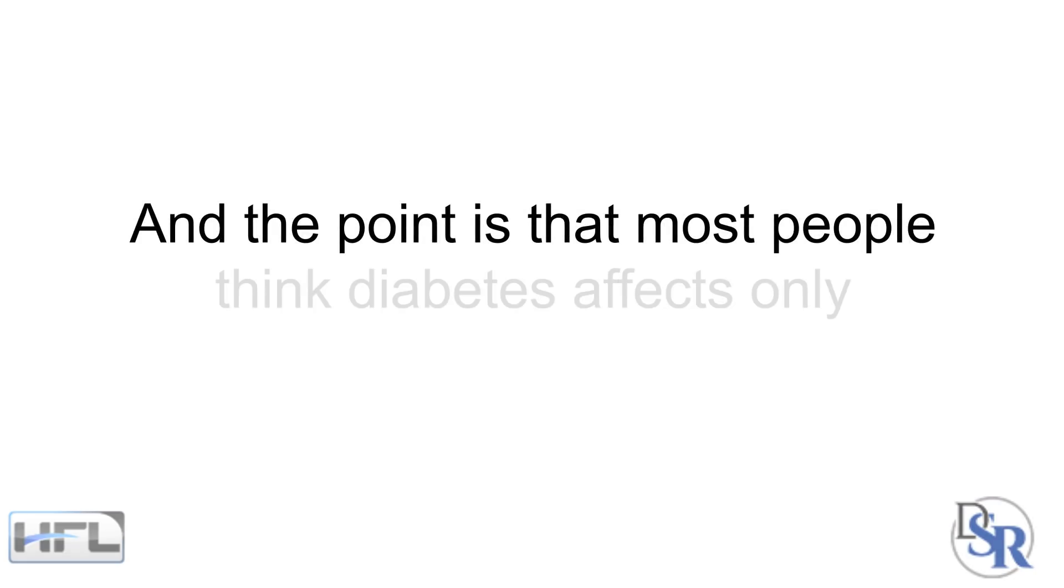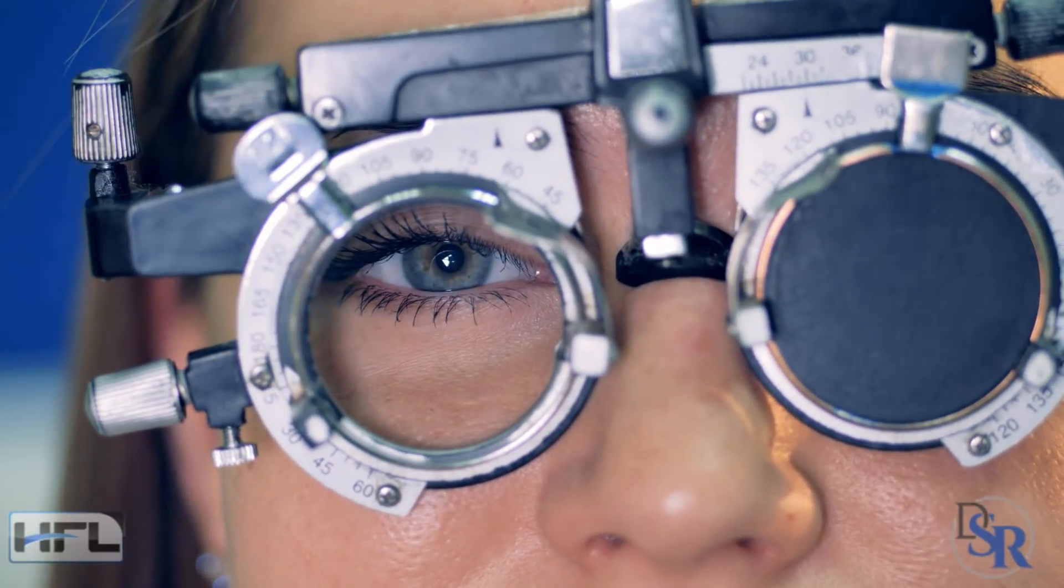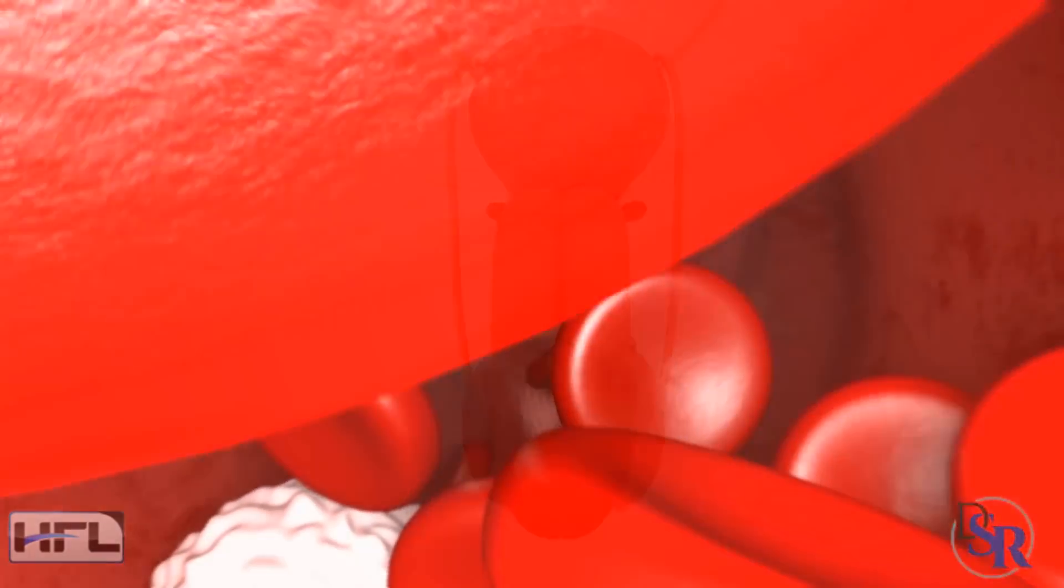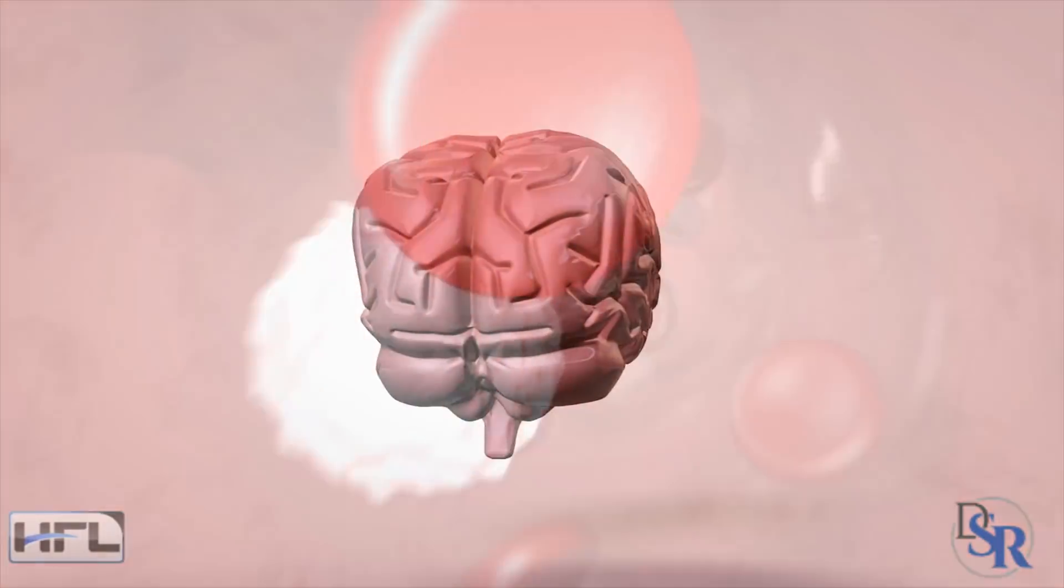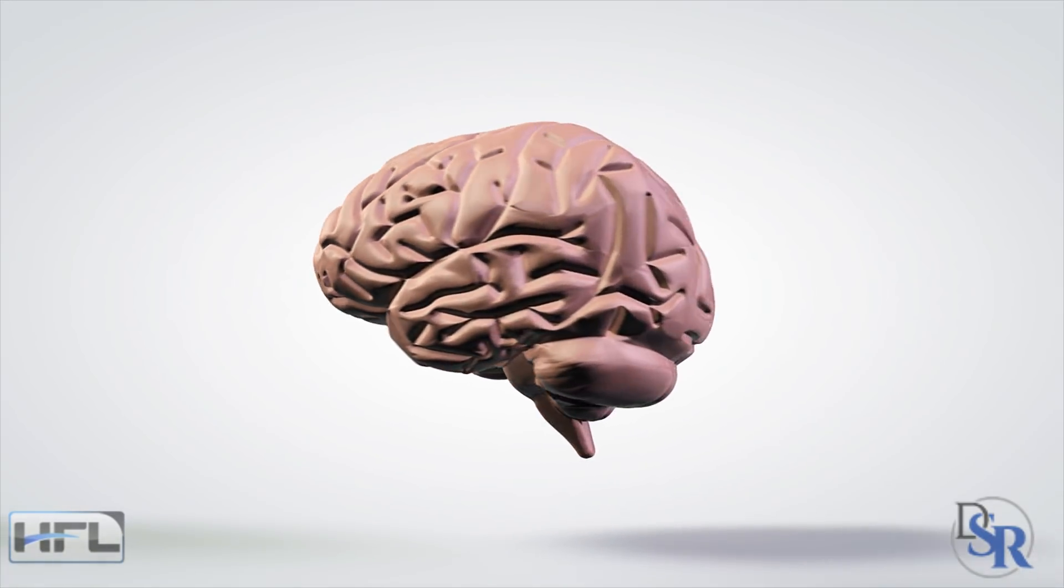The point is that most people think diabetes or high blood sugar affects only their physical body - weight gain, eyesight problems, fatigue, memory loss, impotence, blood flow problems, and so forth. However, it also affects your brain and cognition, which is why I wanted to do today's topic.